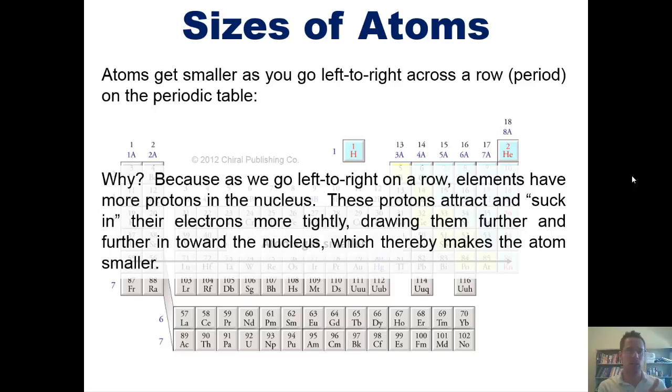They do get another electron as I go from one box to the next going left to right, but one electron doesn't actually increase the size of the element. Having more orbitals does, but as I go from left to right across the periodic table, each element has one more proton than the element that preceded it. That proton in the nucleus attracts and sucks in the electrons more tightly, which draws them further in toward the nucleus, and thereby makes the atom smaller.